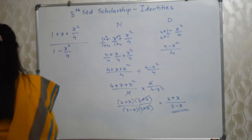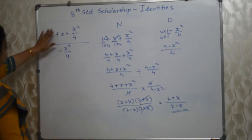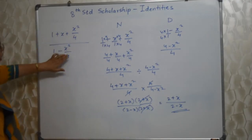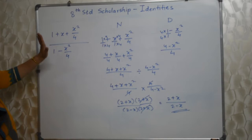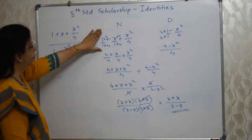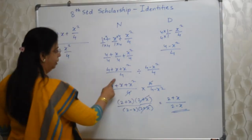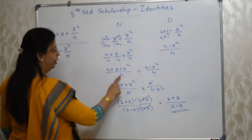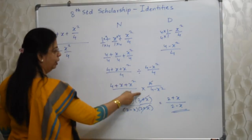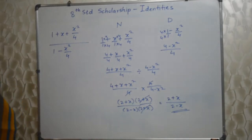Very very easy! Don't get confused by the multiple fractions. If you want, concentrate on the numerator first, then the denominator, write it in that format, convert to multiplication, and then apply factors. So simple.